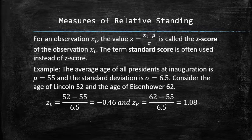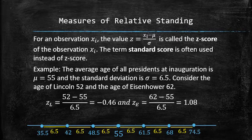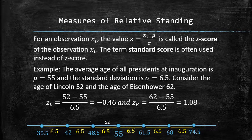A negative z-score indicates that the observation is below the mean, and a positive z-score indicates that the observation is above the mean. The meaning of the z-score is the number of standard deviations that the observation is away from the mean. Lincoln's age of 52 is 0.46 standard deviations below the mean, and Eisenhower's age of 62 is 1.08 standard deviations above the mean.